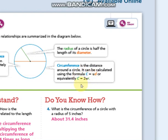And C equals 2 pi R. So it's either C equals pi times D, or C equals 2 pi R.